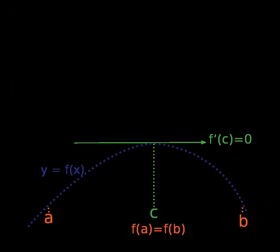Suppose then that the maximum is obtained at an interior point c of (a,b); the argument for the minimum is very similar, just consider −f. We shall examine the above right and left-hand limits separately. For a real h such that c + h is in [a,b], the value f(c+h) is smaller or equal to f(c) because f attains its maximum at c.